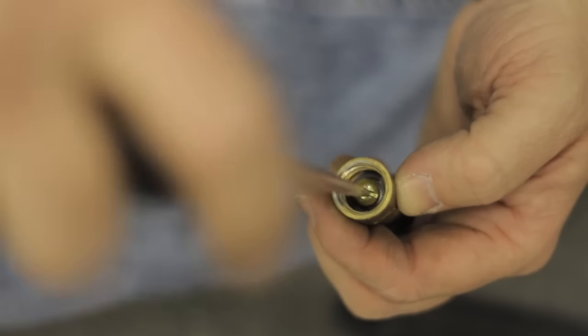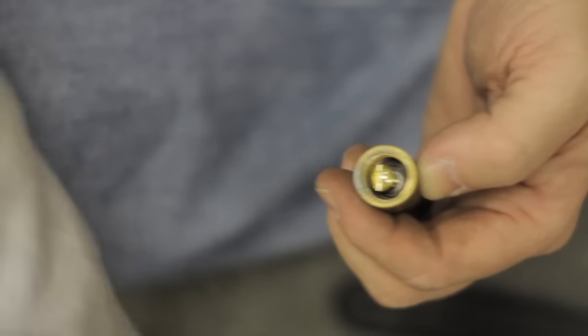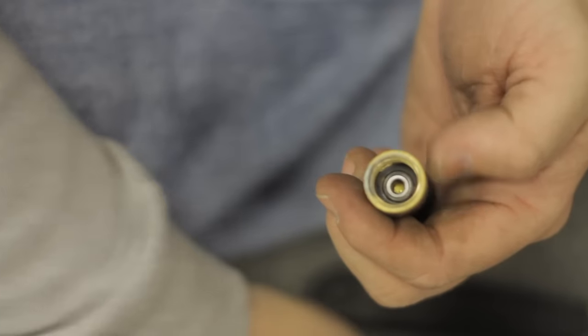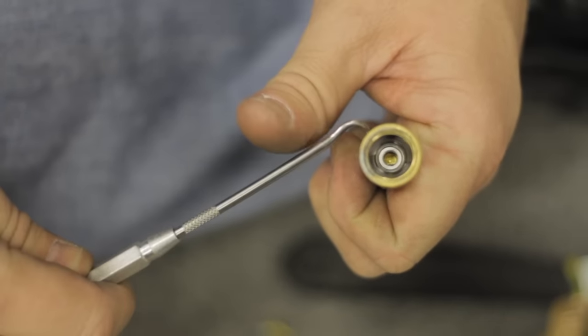When repairing the faucet, you'll need to remove the bib washer. First remove the screw and then take your pick or knife and remove the bib washer.